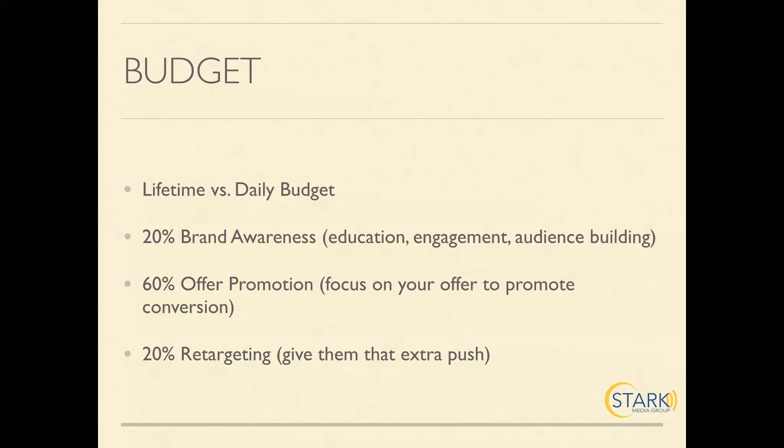I usually set things up with a lifetime budget, where you have a very specific start and end date. With the lifetime budget, you can actually pick specific times you don't want your ads to run. For instance, if our audience is not usually active on the platform between midnight and 5 a.m., running ads then is a waste because the people I need to see it are sleeping. So I can choose with the lifetime budget to not have my ad run between midnight and 5 a.m. I can also set an absolute total — say I only want to spend $800 on this ad over the course of the month — and control things a bit more.